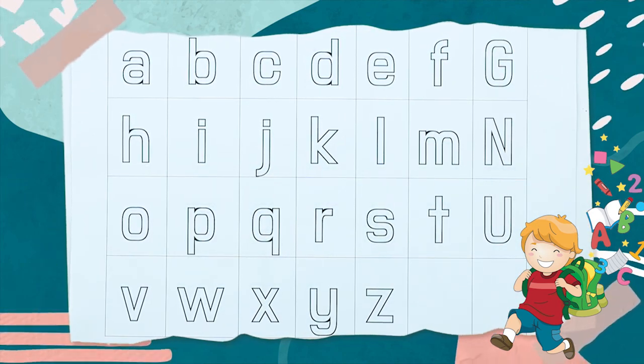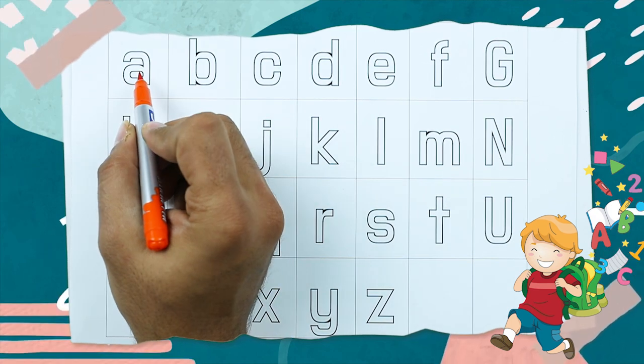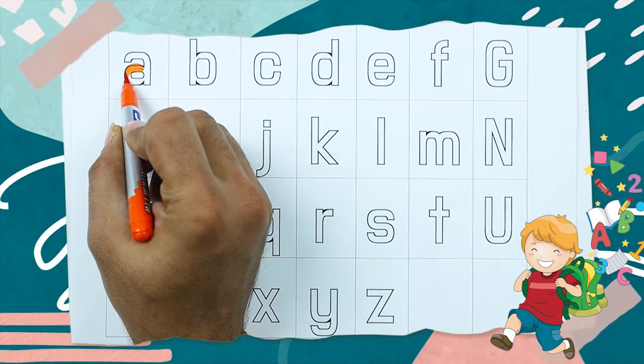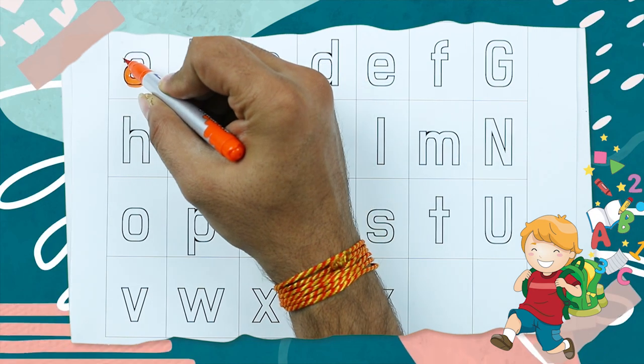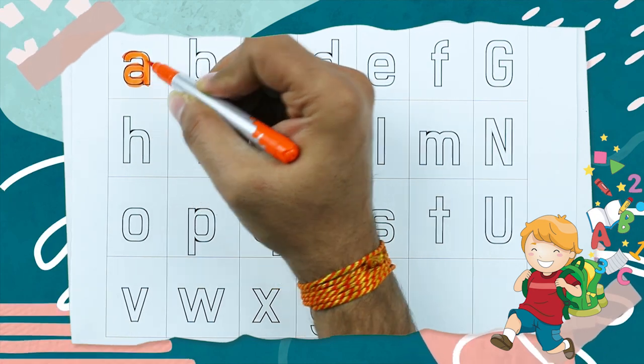Let's start. Make small A. A for apple. It's A.